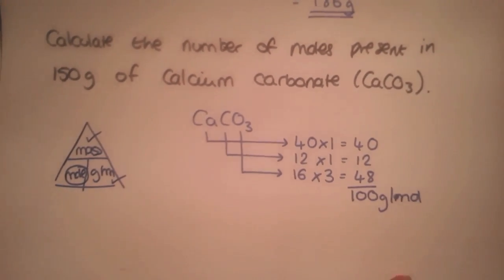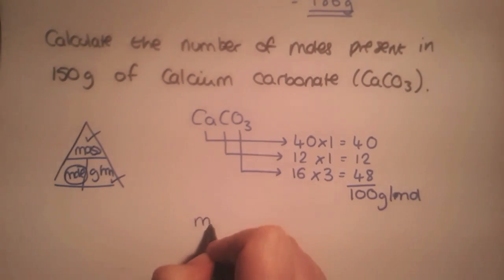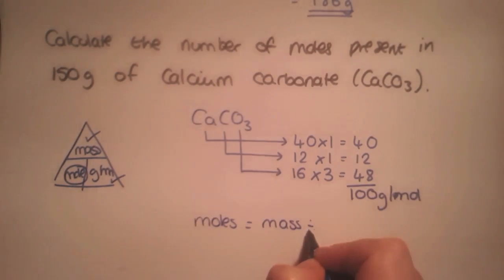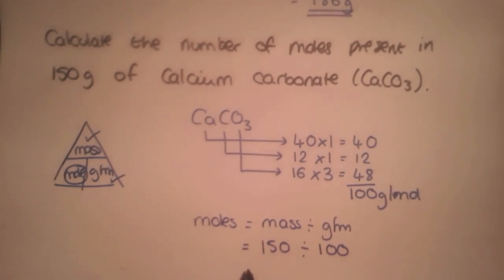Now, rearranging our equation, we are calculating moles, which is equal to mass divided by gram formula mass. Then we insert our numbers. From the question, our mass is 150 grams divided by 100 grams per mole will give us 1.5 moles.